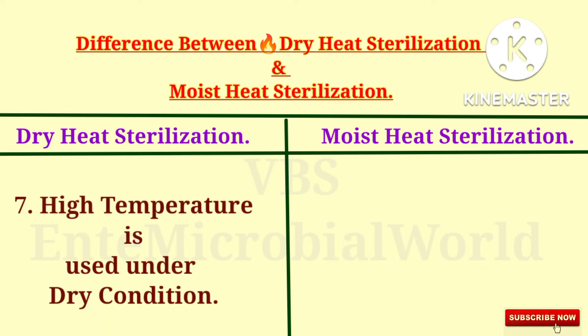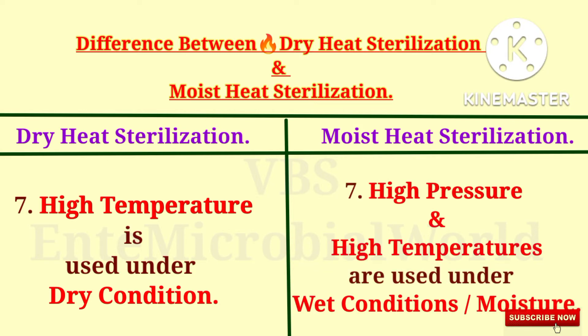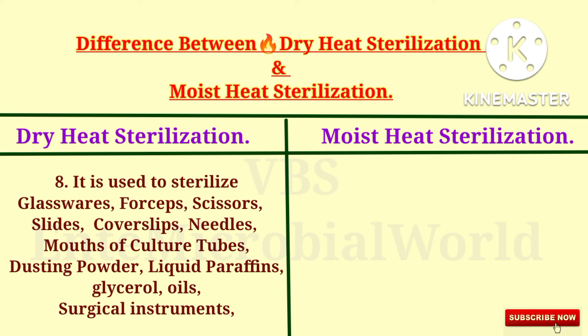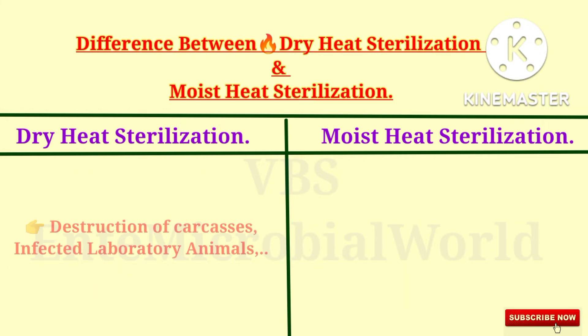In dry heat sterilization, high temperature is used under dry conditions. In moist heat sterilization, high pressure and high temperatures are used under wet conditions or under moisture. Dry heat sterilization is used to sterilize glass, vases, forceps, scissors, slides, cover slips, needles, mouths of culture tubes, dusting powders, liquid paraffins, glycerol, oils, surgical instruments, and it is also used for destruction of carcasses and infected laboratory animals.